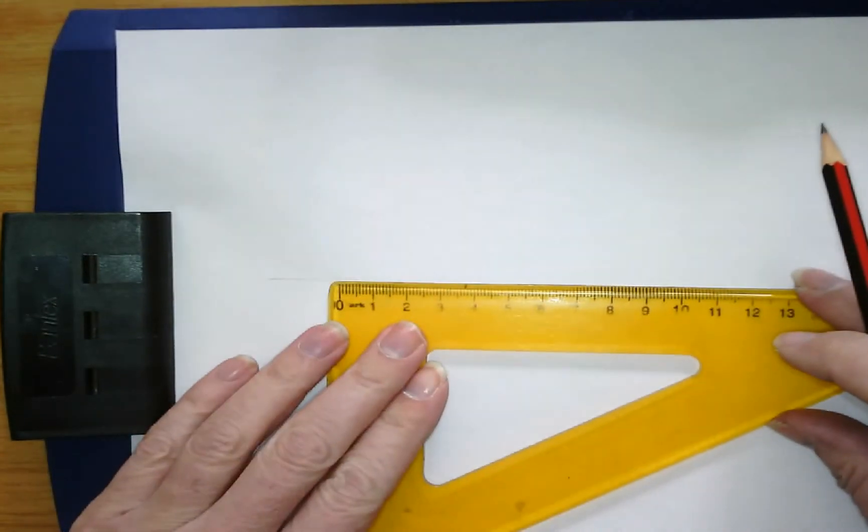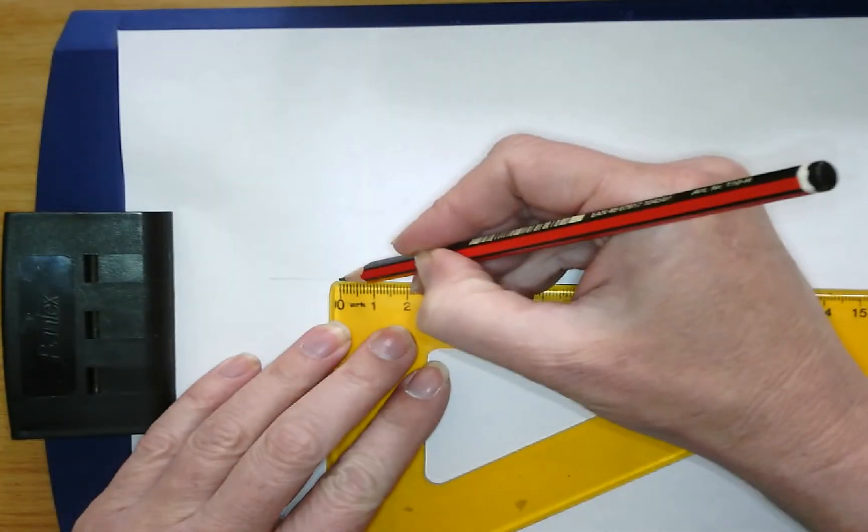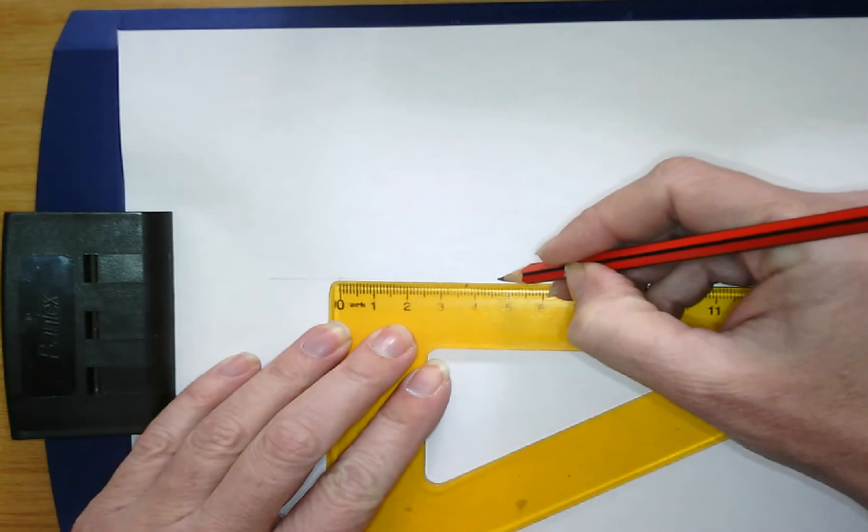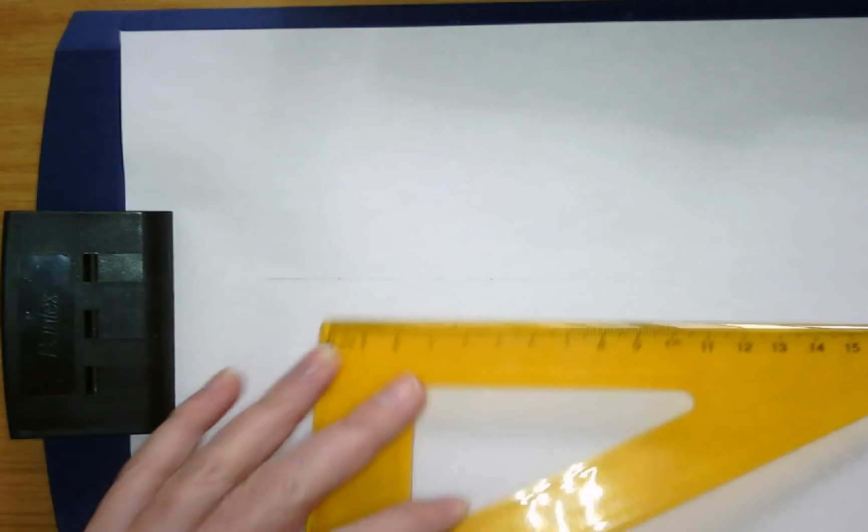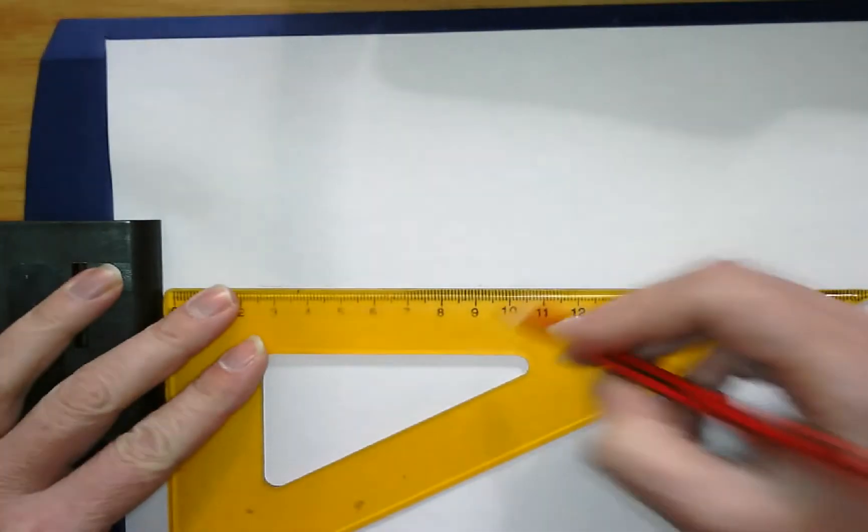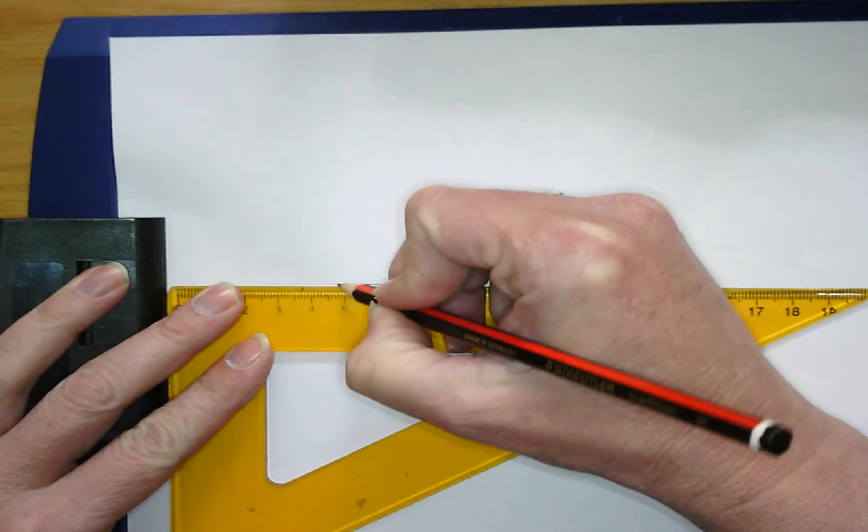We will then measure that side, and depending on what size of triangle you've been asked for, you will mark off that measurement. You can then go back and draw that in dark.